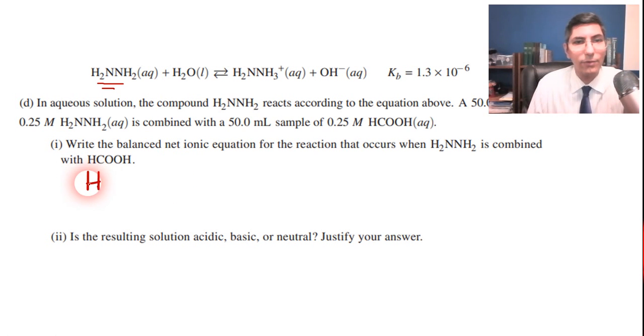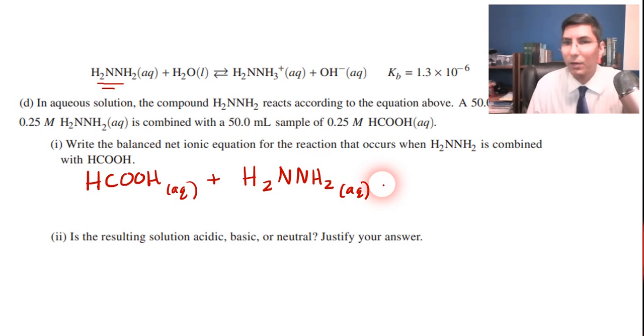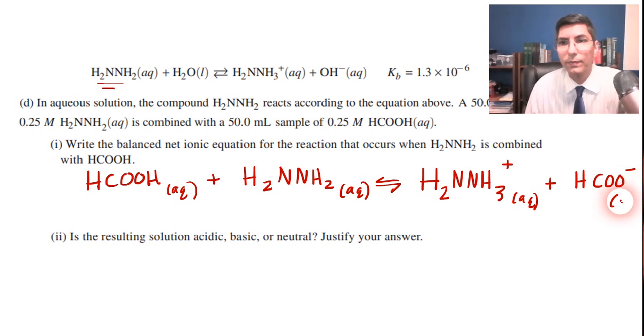It says write the balanced net ionic equation that occurs when this base is combined with methanoic acid. So we have the methanoic acid, that's aqueous. It's going to react with the base. So H2NNH2 and that's aqueous. Don't forget, according to Bronsted and Lowry, an acid is a proton donor. So it's going to lose that H and then the base is the proton acceptor. So it's going to end up receiving the H. The base is going to pick up an H. So I'm just going to stick that H at the end. So we'll make it H2NNH3 plus. And the acid, the methanoic acid is going to lose. So it's going to be HCOO negative like this.